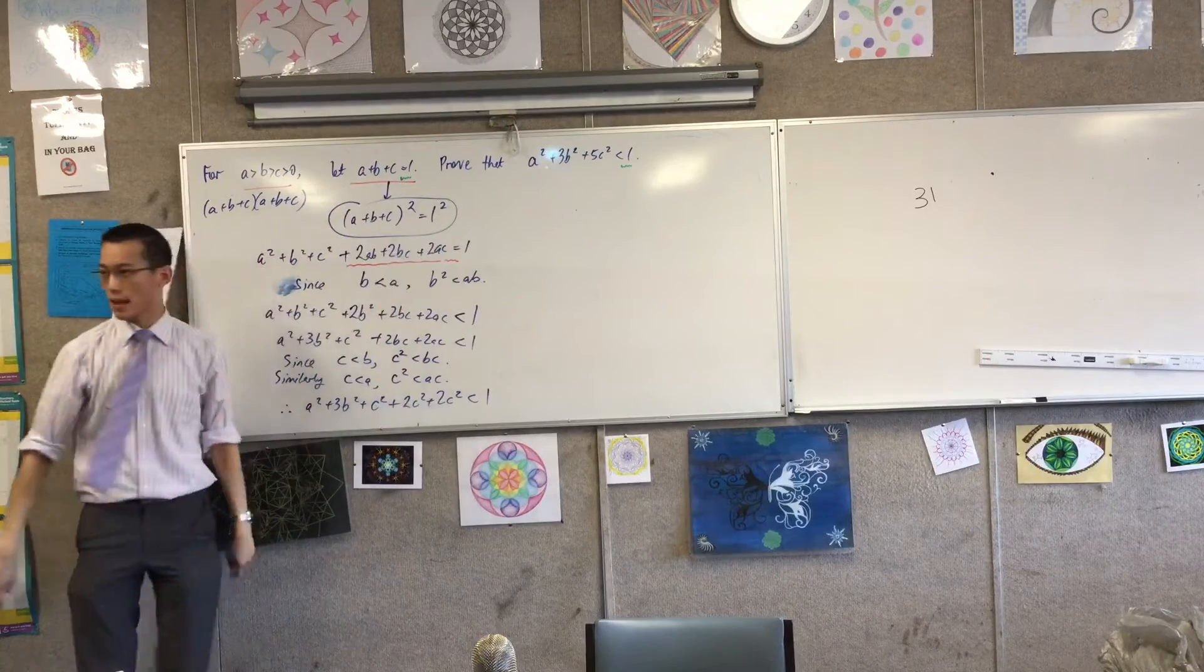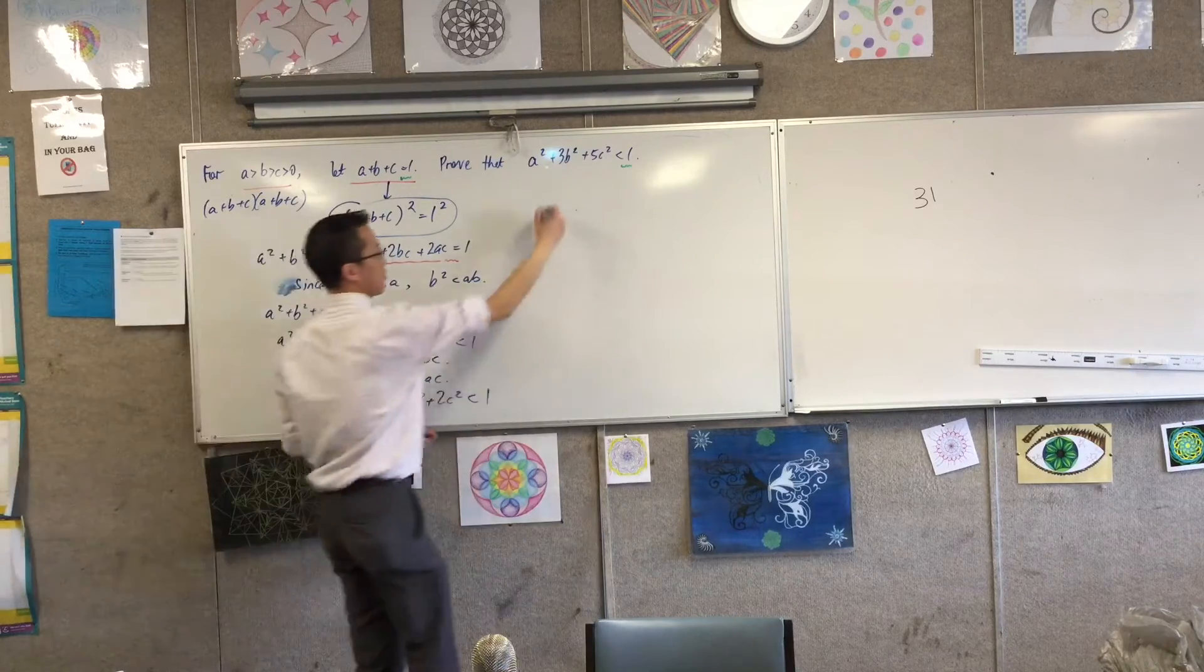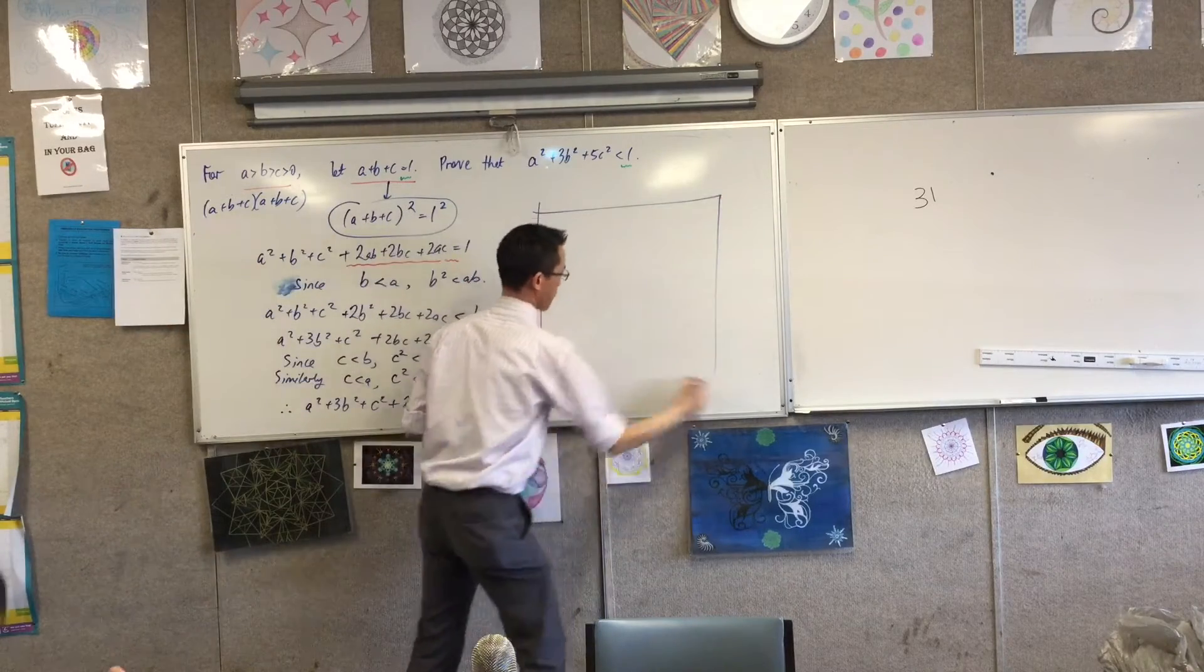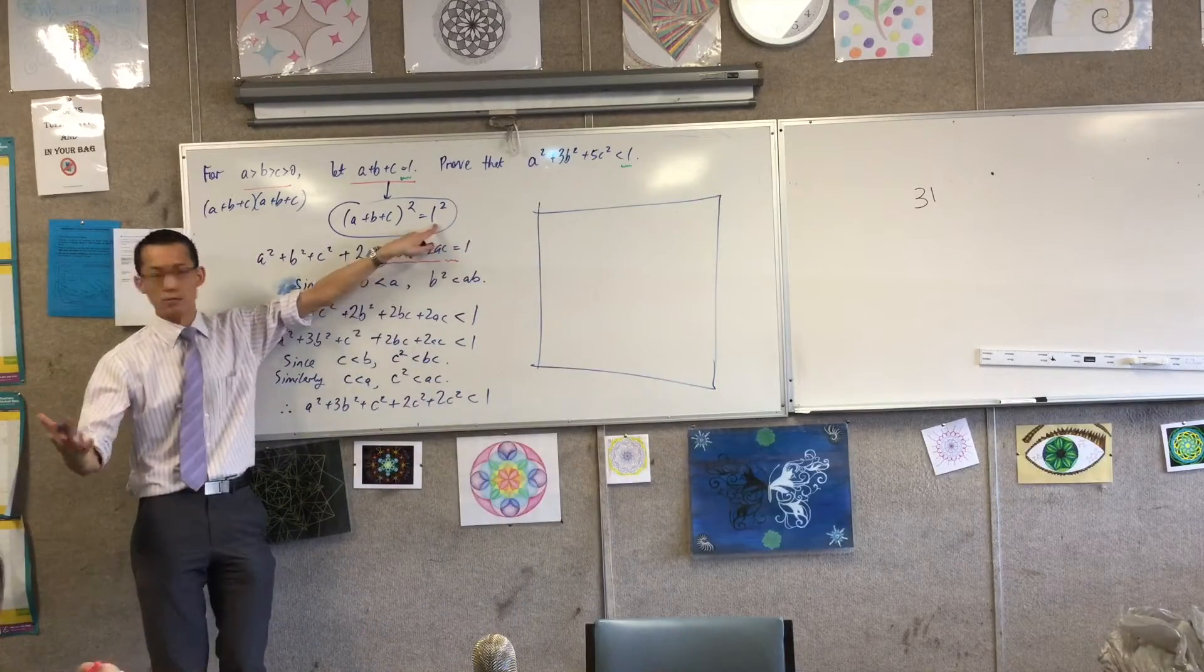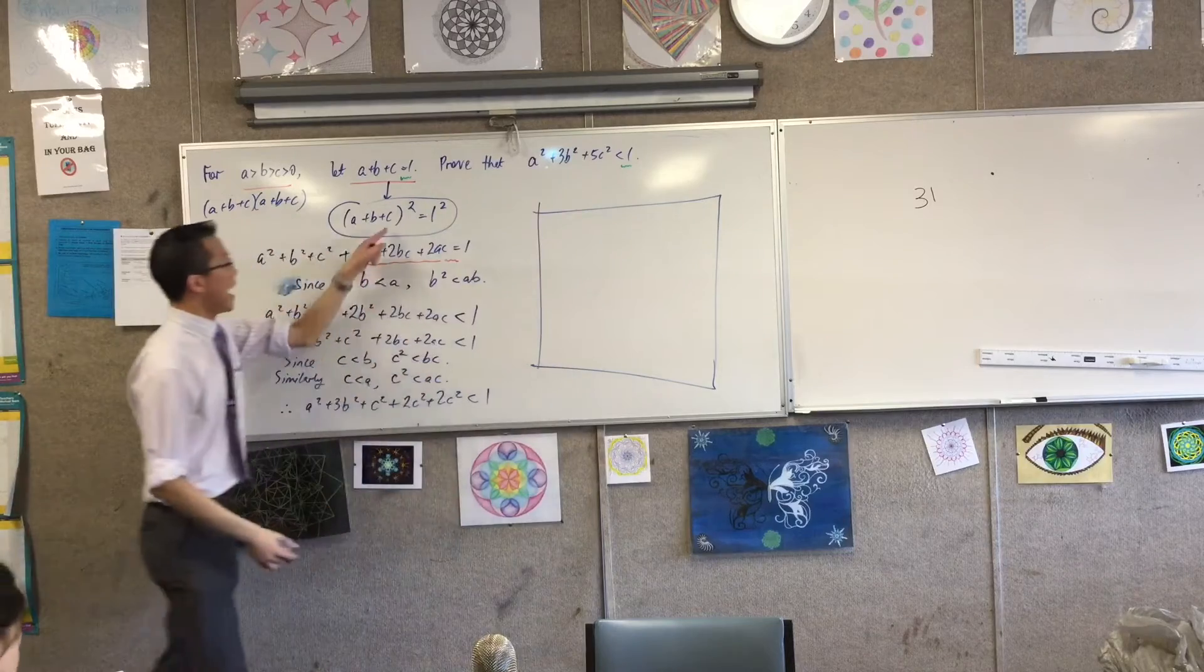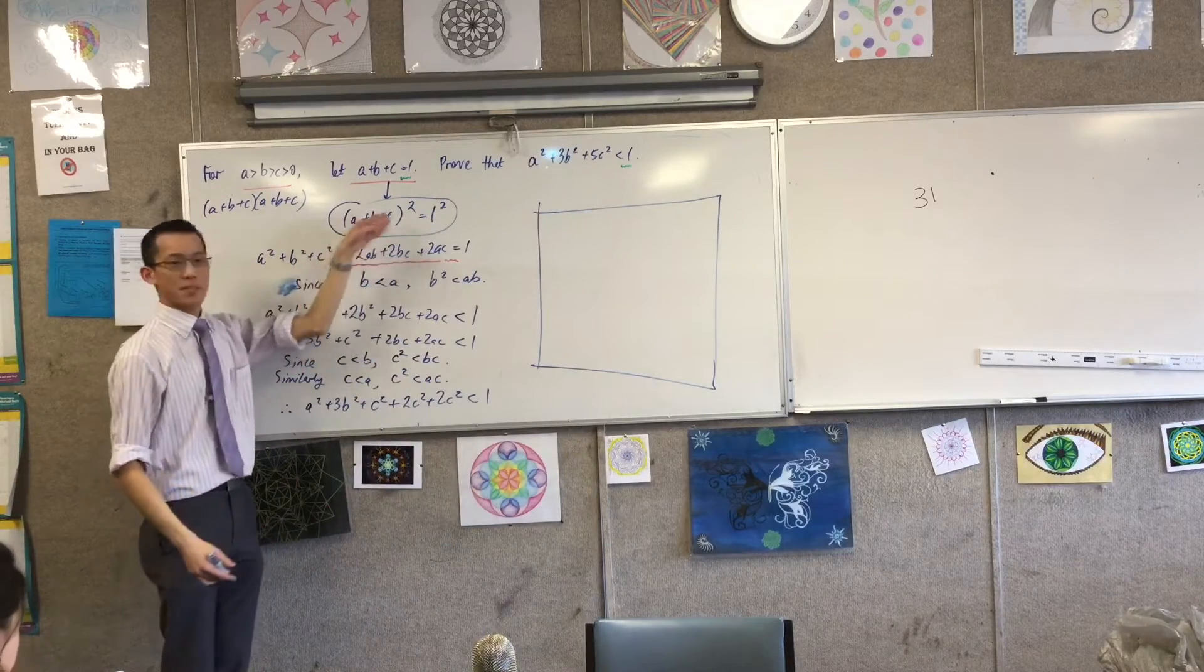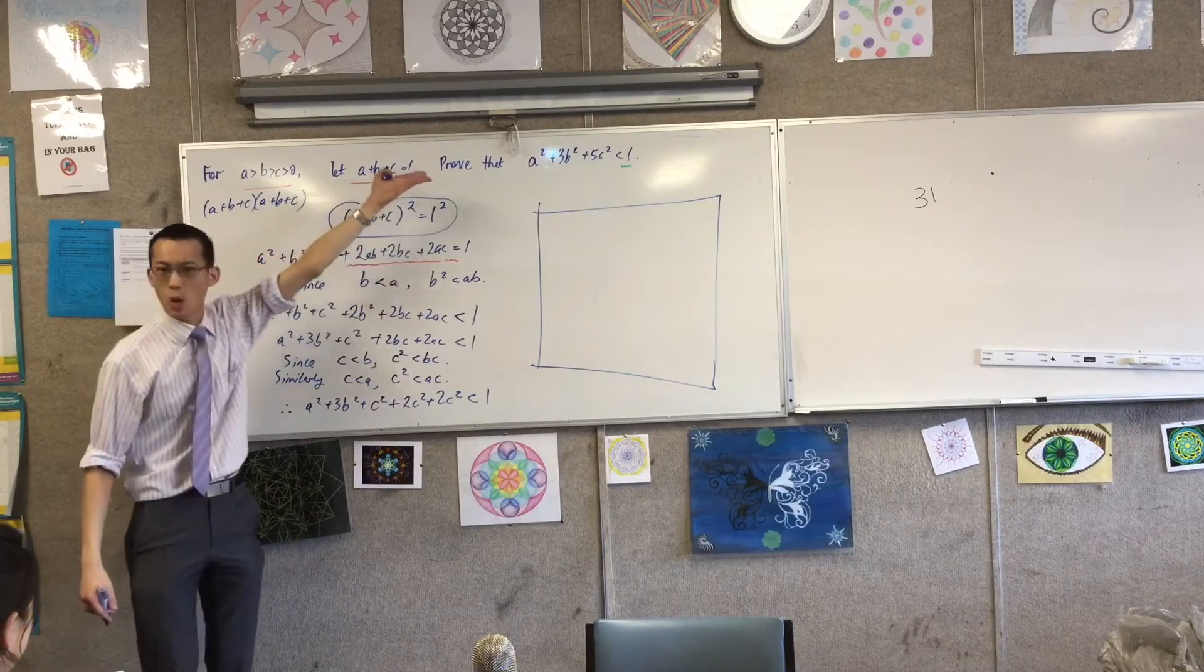So I'm going to take this line as my cube. So this is saying that there's a square and it's one by one, right? And its side length is a plus b plus c, because a plus b plus c is one.